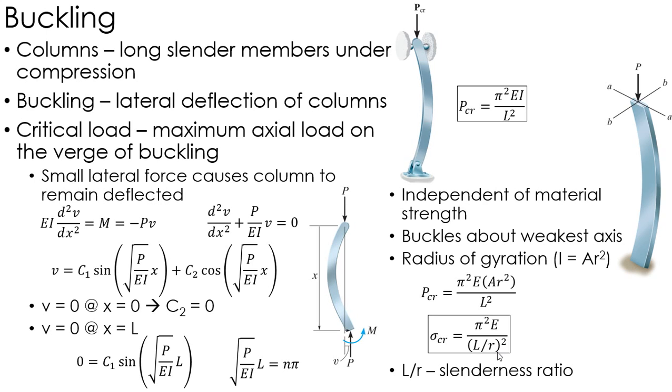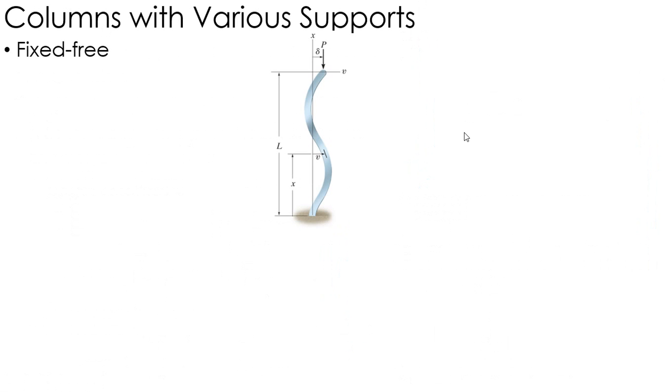It's a function of what we call the slenderness ratio, which is the length of the column divided by that radius of gyration. The bigger that ratio is, the longer and skinnier the column might be. The main equation here is the critical load equation up at the top, and this is for a pinned-pinned connection. Now we can look at it with various other supports.